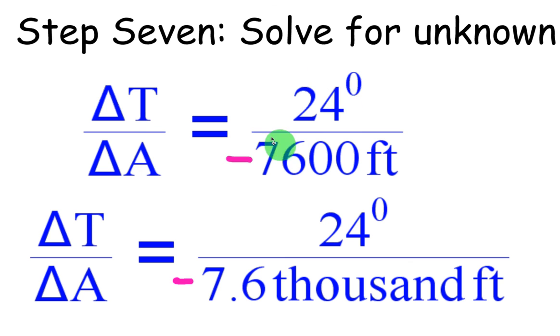So if you just do the simple calculations, top and bottom, you get 24 degrees increase on top, negative 7,600 descent. And now I decided to change that bottom to negative 7.6 thousand feet.